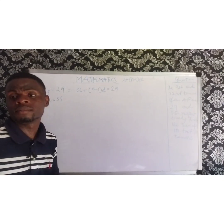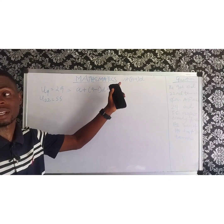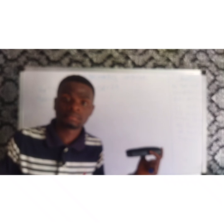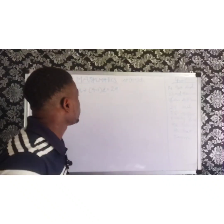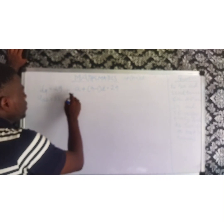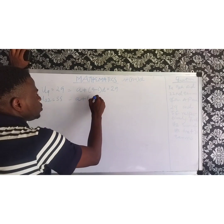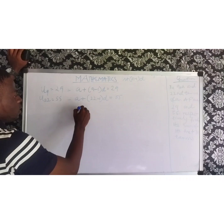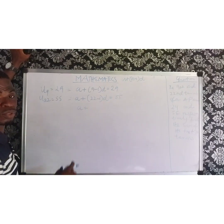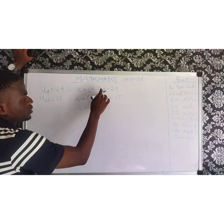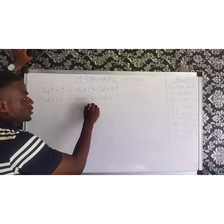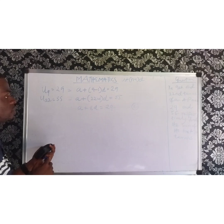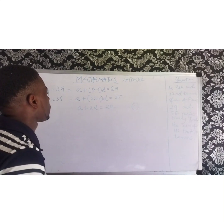In my case, if you look at the other video that we did on arithmetic progression, I explained this very well. A is the first term, N is the nth term, and D is the common difference. Now this one is A plus 9 minus 1, that's 8, times D, which gives us 8D, equal to 29. Automatically, this one is equation 1.